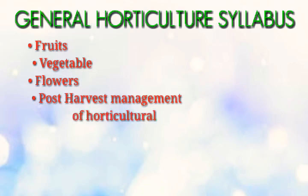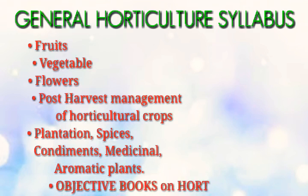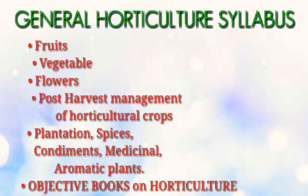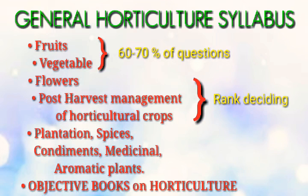The general horticulture syllabus is further divided for easy understanding into: fruits and vegetables, flowers, post-harvest management of horticultural crops, and plantations, spices, condiments, medicinal and aromatic plants, along with objective books on horticulture. Majority of questions — nearly 60 to 70 percent — have been asked from fruits and vegetables, whereas flowers and post-harvest management are considered rank-deciding subjects. Every subject has its own importance and must be balanced.